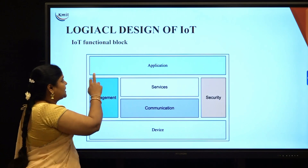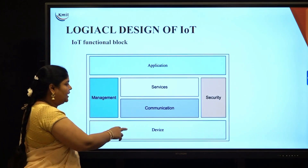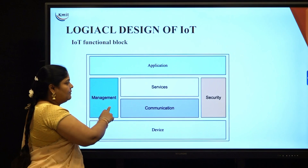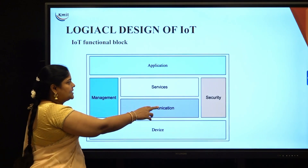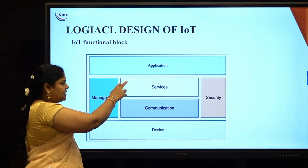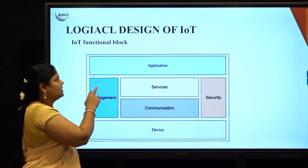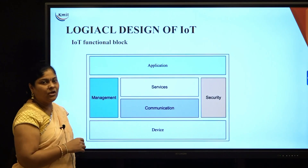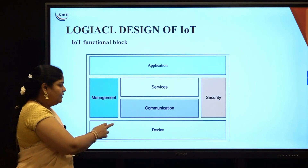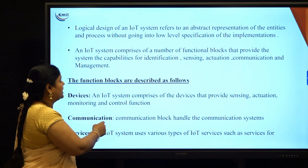The functional blocks are divided into: device, communication, services, management, security, and applications. These are all the different functional blocks in the logical design of IoT. We will see each functional block in detail.